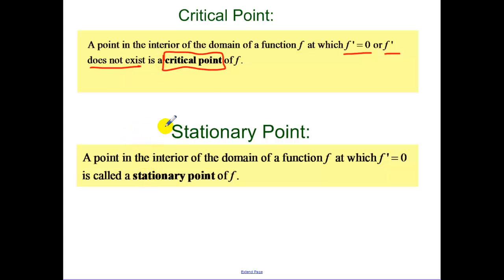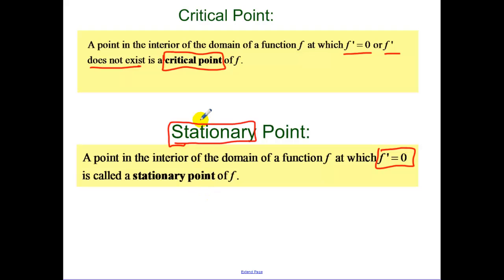A stationary point is just when our derivative equals zero. You can remember 'stationary' — when you're stationary, you're not moving, so your rate of change is equal to zero. Versus critical: anything when your derivative doesn't exist or is equal to zero.